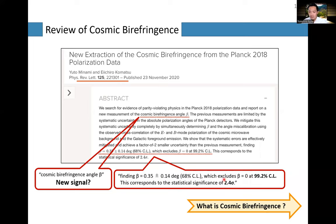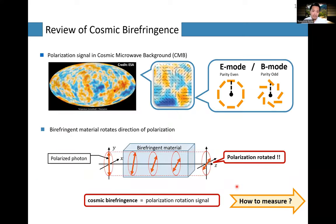Their finding is this: rotation angle beta is 0.35 degrees ± 0.14 degrees, which excludes the null result at the 99.2% confidence level. The statistical significance is 2.4 sigma. They claimed they found cosmic birefringence.